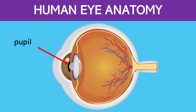This is the pupil. The black circular opening in the center of the iris is called the pupil. It allows light to enter the eye and reach the retina. The size of the pupil increases or decreases depending on the amount of light entering the eye at any given time.